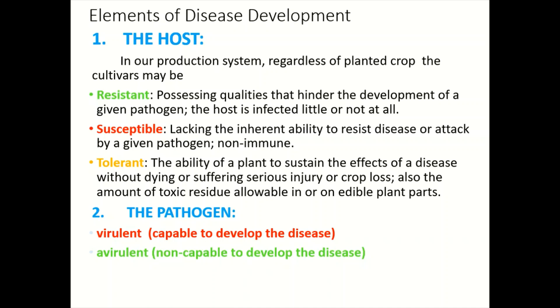The different elements of the disease triangle are very important for the development of the disease. Number one is host. In our production system, regardless of the crop, the cultivars may be resistant, susceptible, or tolerant. In a resistant response, the cultivar possesses qualities that hinder the development of the given pathogen, and the host is infected little or not at all.